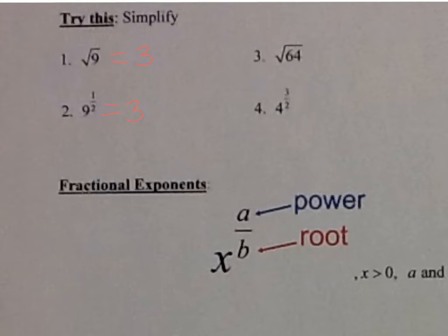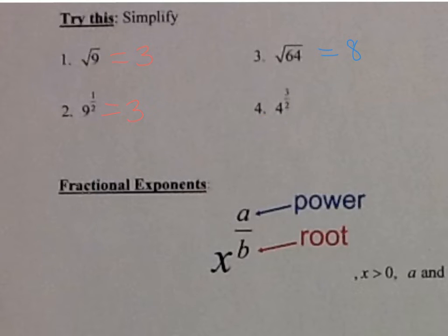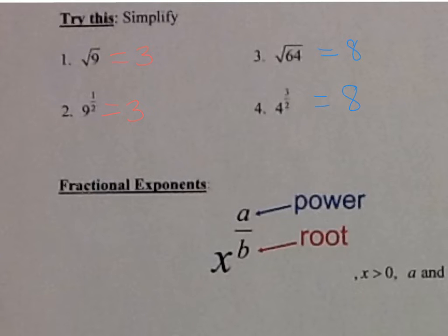Let's look at examples 3 and 4 to find the relationship. The square root of 64 is 8. Now type into your calculator 4 raised to the three-halves power, and 4 raised to the three-halves power is also equal to 8.